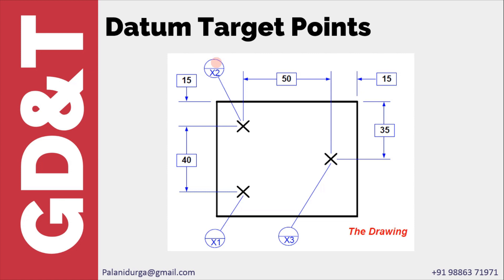It will be filled only for areas. This is the symbol for datum target points. We put an X mark and for this identification we give alphanumerics like X1, X2, X3 or A1, A2, A3. You can give any alphanumeric number. The location of the target points must be by basic dimensions.